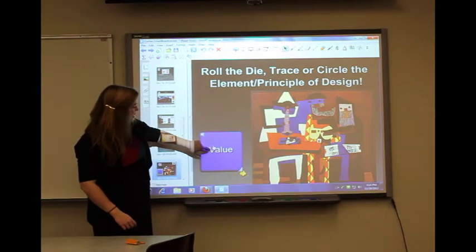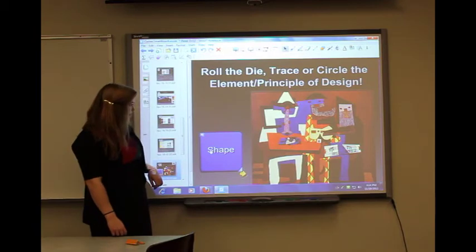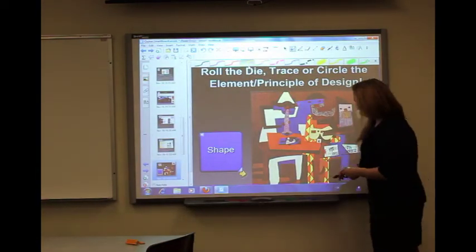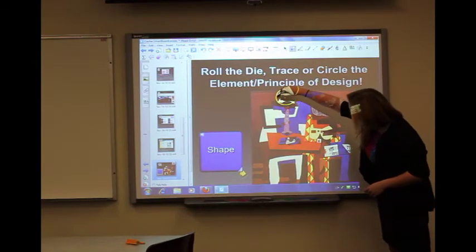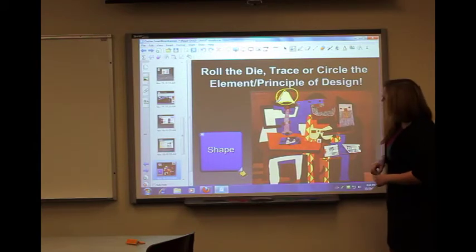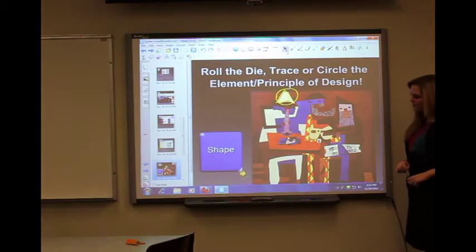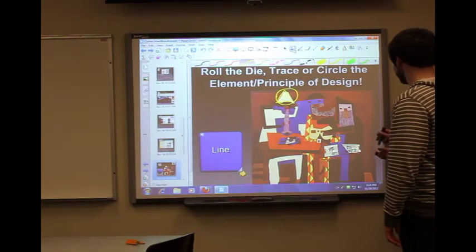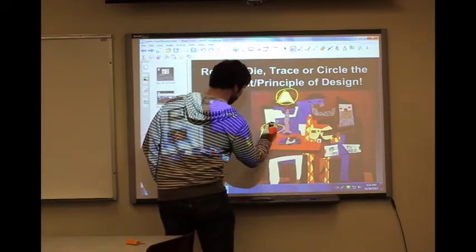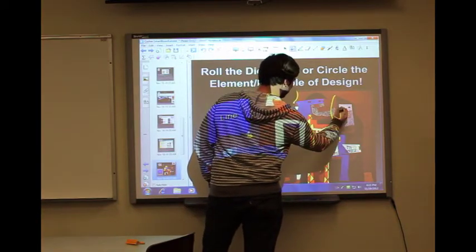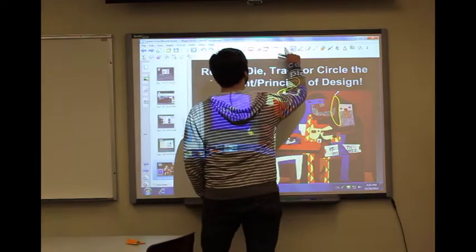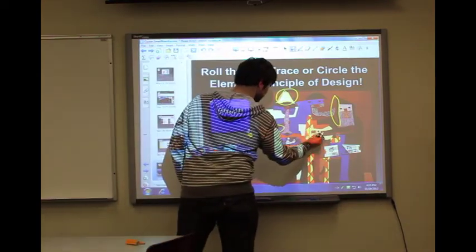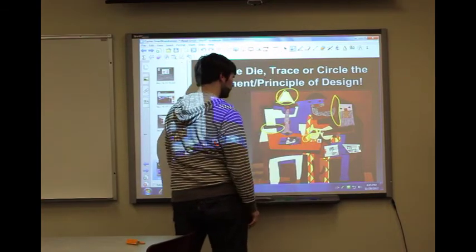We have a dice here, and when you click it, it will roll and an element or principle of design will come up. It came up with shape, so I'm going to find a shape — I see a nice triangle here, so I'm going to go ahead and circle that. Can I have a student come up and roll the dice? We've got a line — go ahead and trace or circle some lines. Do one more. Good. Roll the dice again. And circle a shape. What shape is that? A rectangle and triangle. Good job.